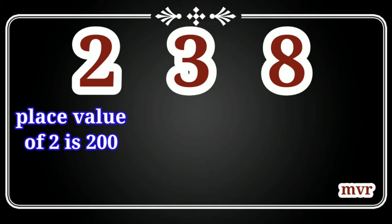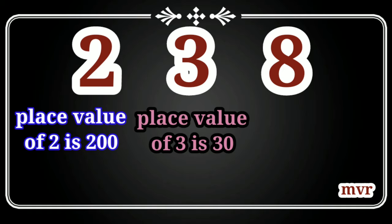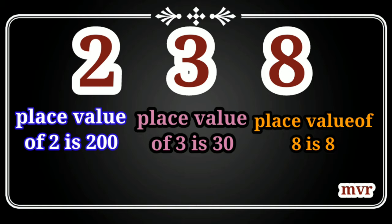Why? Because two is in the place of hundreds, that's why the place value of two is two hundred. Three is in the place of tens, that's why the place value of three is thirty. And eight is in the ones place, that's why the place value of eight is eight.